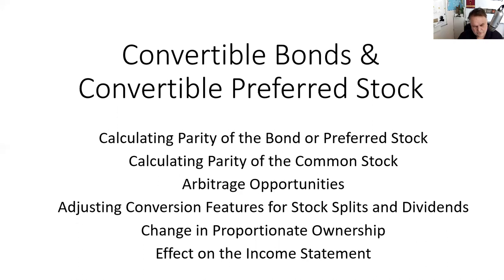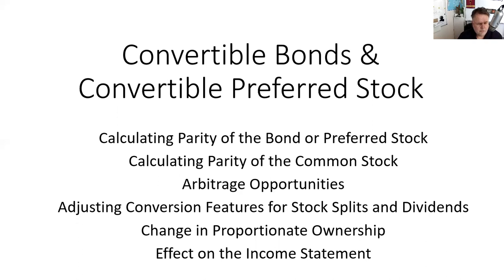We're also going to show you how to adjust conversion features for stock splits and dividends. It makes sense that if I own a convertible preferred stock or convertible bond, I'd want to convert into the same proportion of ownership as when I bought it originally in the primary market. In the trust indenture — remember, the trust indenture is the contract between the issuer and the trustee for the benefit of the bondholders — the issuer agrees to adjust the convertible for any stock dividends or stock splits.